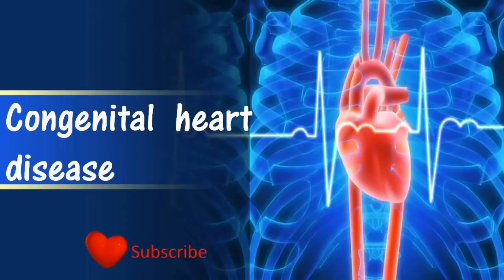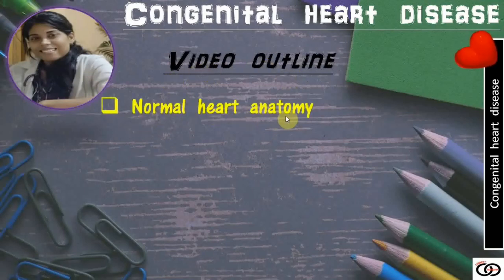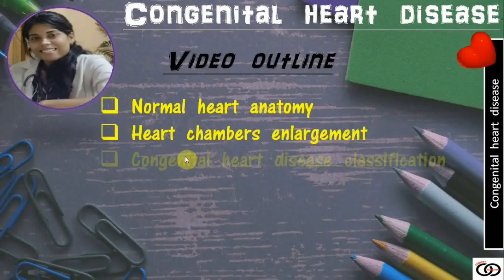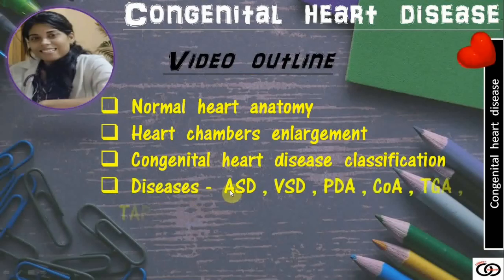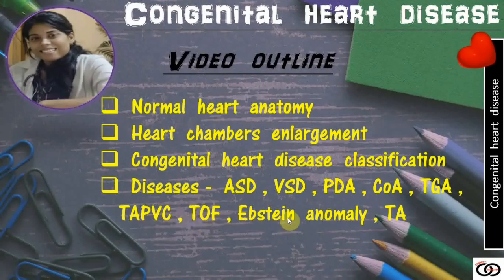Congenital heart disease. First, the overview of what I am going to discuss today. We will discuss the normal heart anatomy, heart chamber enlargement, classification of congenital heart disease, then individual diseases like atrial septal defect, ventricular septal defect, patent ductus arteriosus, coarctation of aorta, transposition of great arteries, total anomalous pulmonary venous connection, tetralogy of Fallot, Ebstein anomaly, and tricuspid atresia. And finally, the summary.